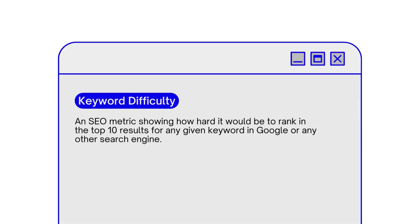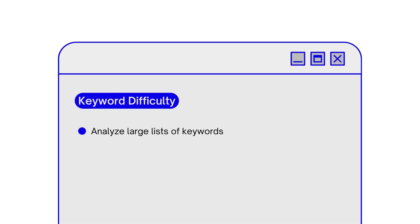Keyword difficulty is an SEO metric showing how hard it would be to rank in the top 10 results for any given keyword in Google or any other search engine. If you don't take this metric into account, you're wasting time optimizing pages for the wrong keywords, which is the worst nightmare for any SEO. In simple terms, keyword difficulty will help you quickly analyze large lists of keywords, pick the most effective ones, and save time and effort.